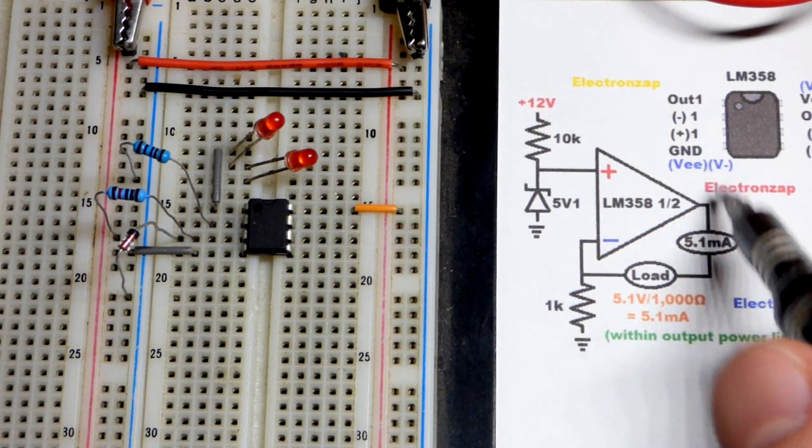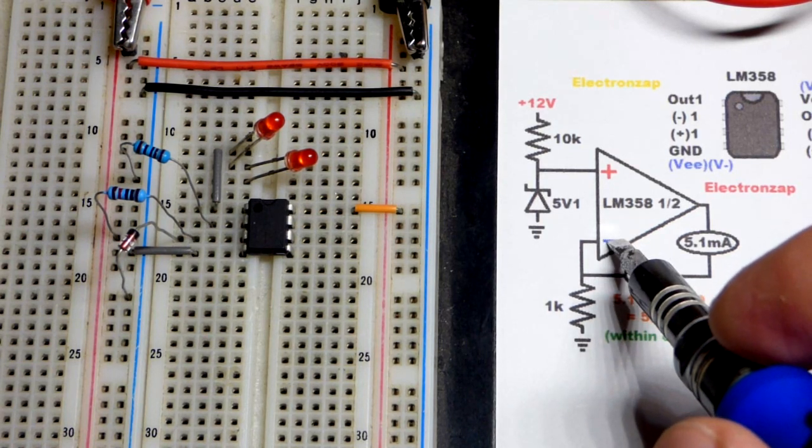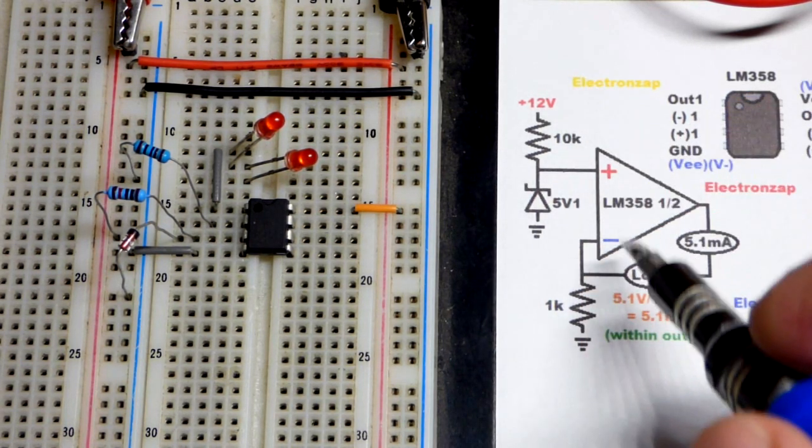And so with the load it has to have a higher voltage, but ultimately you'll have 5.1 volts at the inverting input if all things go well. You have enough power and everything.